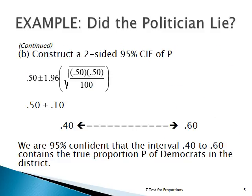Now we're constructing a confidence interval. With a confidence interval you don't have any claims — you work only with sample evidence, which was 50 out of 100 or 0.50. We use the Z-score of 1.96 for 95% confidence: 0.50 plus and minus 1.96 times the square root of 0.50 times 0.50 over 100. The margin of error is 0.10, so we're 95% confident the true proportion lies between 40% and 60%.